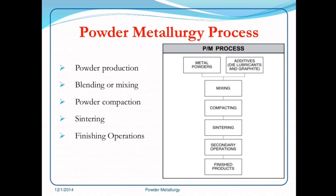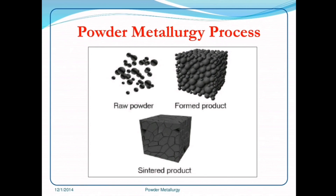The powder metallurgy process has five steps: powder production, blending or mixing, powder compaction, sintering, and finishing operations. The schematic diagram shows the powder metallurgy process. Metal powders and additives such as die lubricants and graphite are mixed together, then compacted, then sintered — sintering means heating — then secondary operations yield the finished products.